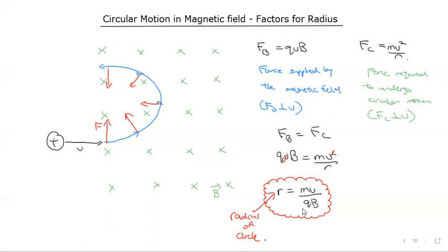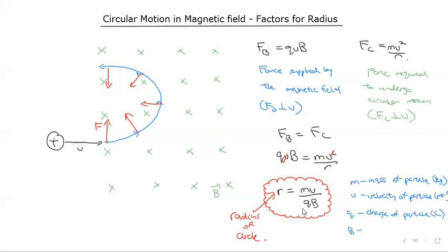The radius of this circle will equal the mass times the velocity — or the momentum if you like — divided by the charge times the magnetic field strength. So r = mv / qB, where m is the mass of the particle in kilograms, v is the velocity in meters per second, q is the charge of the particle in coulombs, and B is the magnetic field strength in tesla.